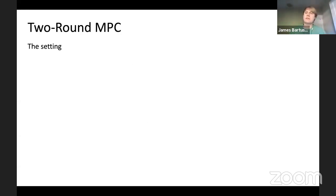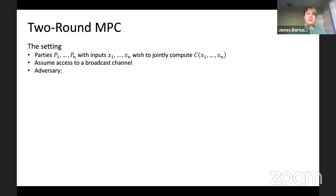I'll be talking about this recent work, reusable two-round MPC. The setting we're considering is parties with inputs wishing to jointly compute a circuit. We assume access to a broadcast channel and consider a dishonest majority adversary who can corrupt up to N minus one parties, restricted to polynomial time, considering both semi-honest and malicious security.